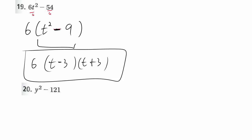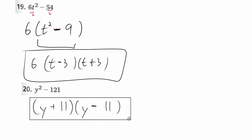Similarly, number 20 is that conjugate case — a difference of two perfect squares. It's going to factor into two conjugates. The only way to get no middle term is if it cancels out, and that only happens when the numbers are the same but the signs are opposite. Remember, the order doesn't matter — if you wrote y minus 11 first and then y plus 11 second, that's still correct. Either order, because of the commutative property, will be correct.